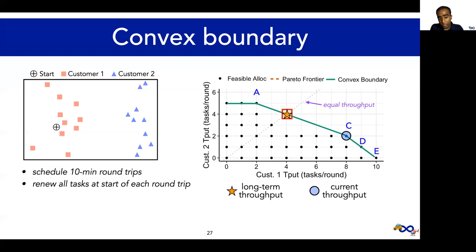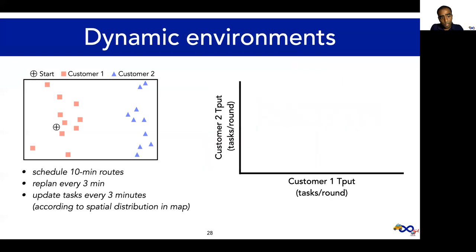In fact, we've proven in our paper that this target throughput that Mobius achieves is indeed the best possible throughput given the fairness objective of equalizing throughput. The analysis in this example is simple because the environment is static, meaning the convex boundary remained unchanged from one round to the next. In practice, though, environments are more dynamic. Customer tasks may not recur at the same location, and vehicles need not return to their start location this frequently.